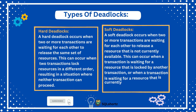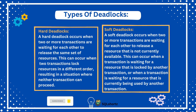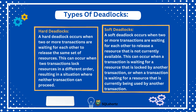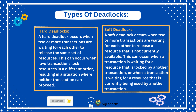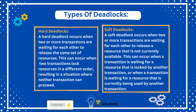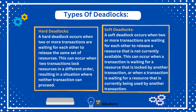The first one is hard deadlocks. A hard deadlock occurs when two or more transactions are waiting for each other to release the same set of resources. This can occur when two transactions lock resources in a different order, resulting in a situation where neither transaction can proceed.